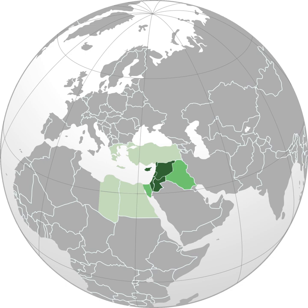The largest religious group in the Levant are the Muslims, and the largest cultural-linguistic group are Arabs, due to the Muslim conquest of the Levant in the 7th century and subsequent Arabization of the region. Other large ethnic groups in the Levant include Jews, Kurds, Turkmens, Assyrians, and Armenians. The majority of Muslim Levantines are Sunni, Alawi, or Shia Muslim.